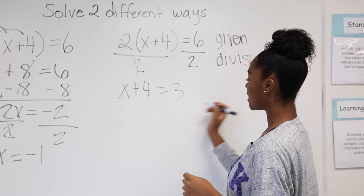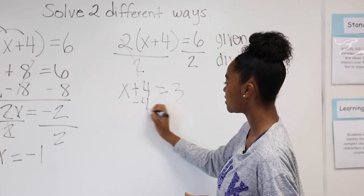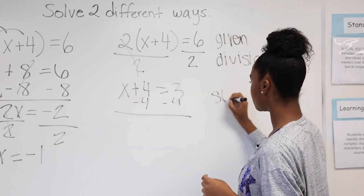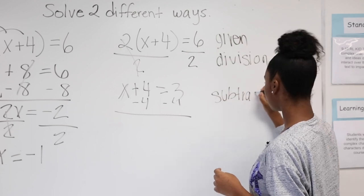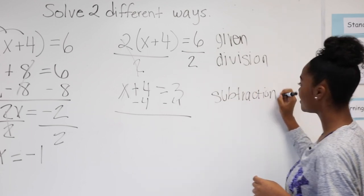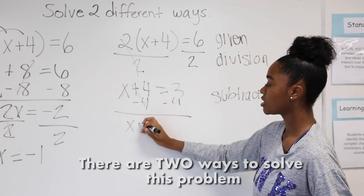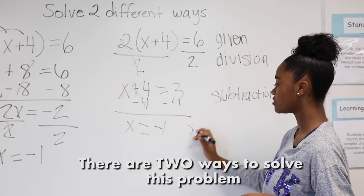So after that, you're going to want the x by itself, so you subtract the 4 on both sides. That's your subtraction property. So that crosses out. The x equals 3 minus 4, negative 1, and that's your solution.